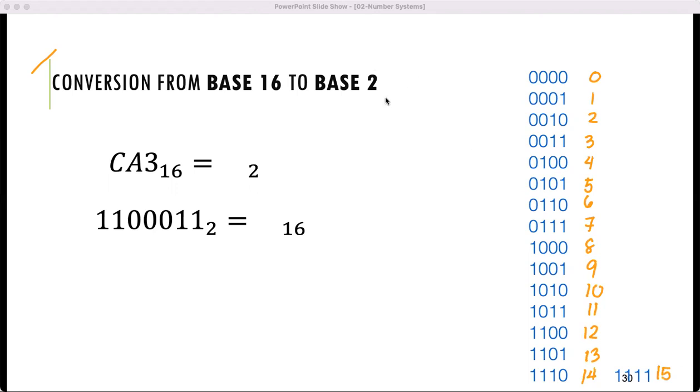But remember, in hexadecimal we don't really use 10. We use letter A, letter B, letter C, letter D, letter E, and then for 1111, which is 15, is F. So we will use these values.